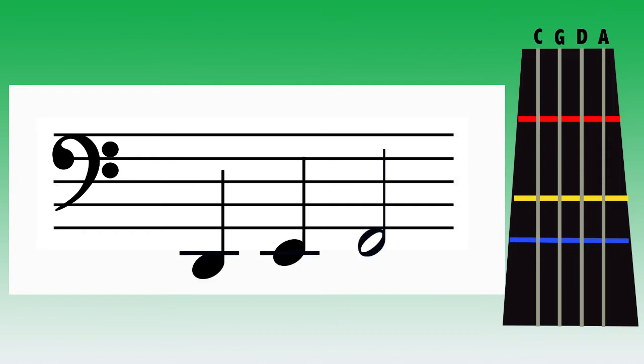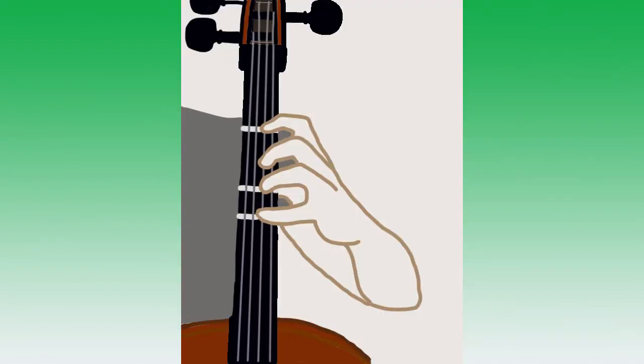I hope you made sure to use good technique. Your elbow should be at a 45 degree angle to your torso with your thumb centered behind your second finger. Your fingers should be equally spaced and shaped like the letter C. Try not to collapse. Feel free to pause the video to practice this pattern with good technique and intonation.